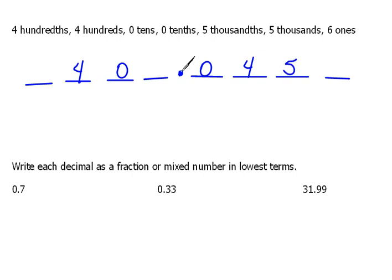Five thousand would be ones, tens, hundreds, thousands. And six ones would be one place to the left. So our number would look like five thousand, four hundred six and forty-five thousandths.